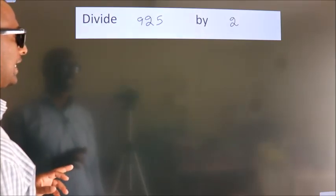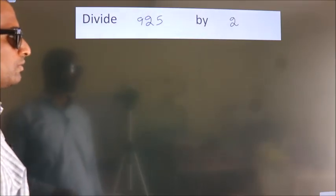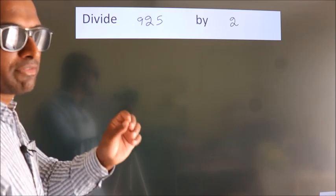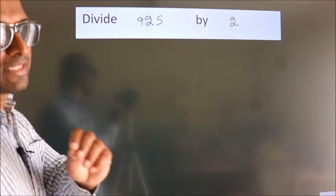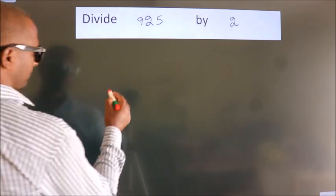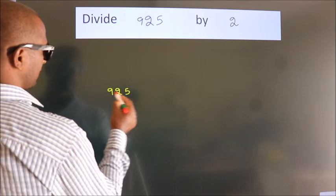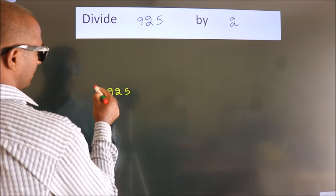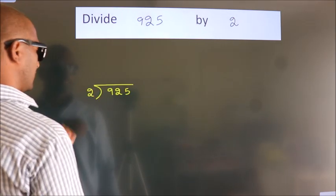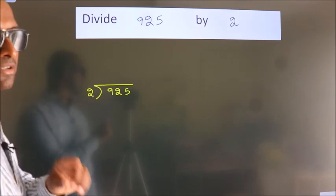Divide 925 by 2. To do this division, we should frame it in this way: 925 here, 2 here. This is your step 1.